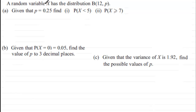We've got a random variable X that has the binomial distribution with parameters n=12 and P, where 12 is the number of trials. We're given that P equals 0.25 and asked to find the probability that X is less than five, and then in part two the probability that X is greater than or equal to seven.